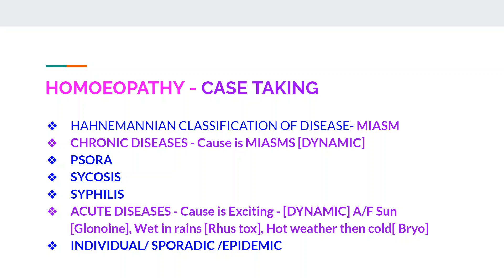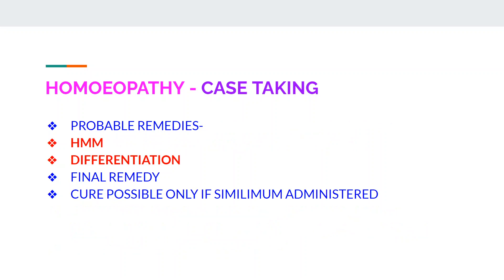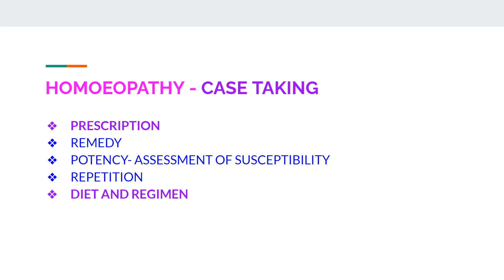We then arrive at classification of disease. In chronic disease, the cause is miasm — types being psora, psychosis, and syphilis. In acute diseases, the cause is an exciting factor — for example, sun aggravation, getting wet in rain, or exposure to hot then cold weather — giving remedies like Glonoin, Rhus tox, or Bryonia. Types of acute diseases are individual, sporadic, and epidemic. We then arrive at probable remedies, and with the help of homeopathic materia medica, differentiation is done to arrive at the final remedy. Cure is possible only if the similimum is administered. Prescription is given regarding remedy, potency, and repetition, and diet and regimen is also advised.